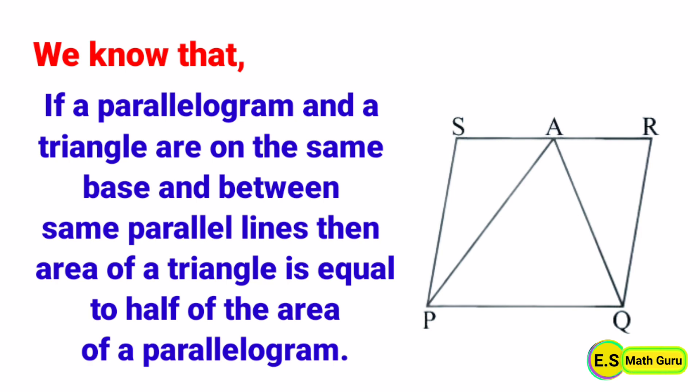Dear friends, from the figure, PQRS is a parallelogram and APQ is a triangle. These two figures are on the same base PQ and between the same parallel lines PQ and RS. Therefore, the area of triangle APQ is equal to half of the area of parallelogram PQRS.